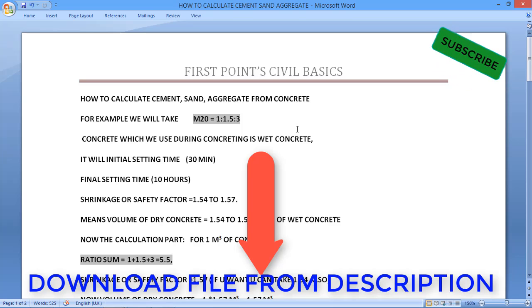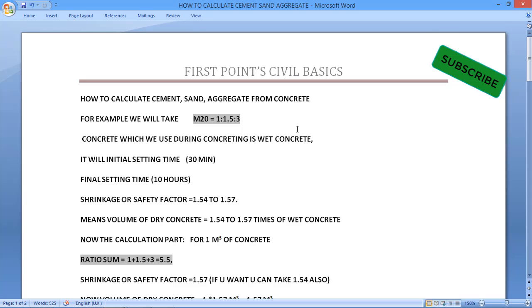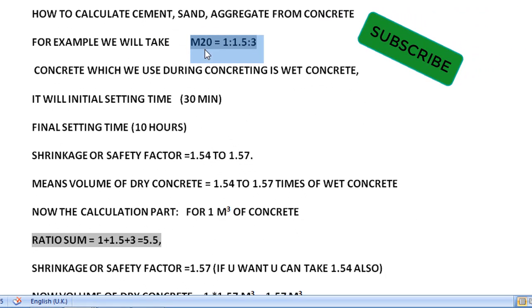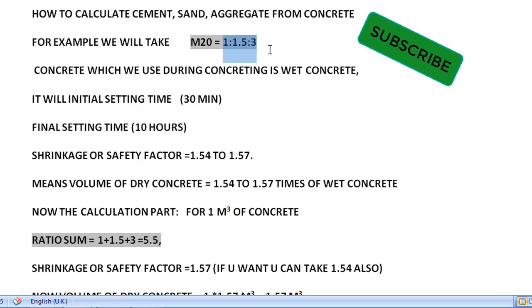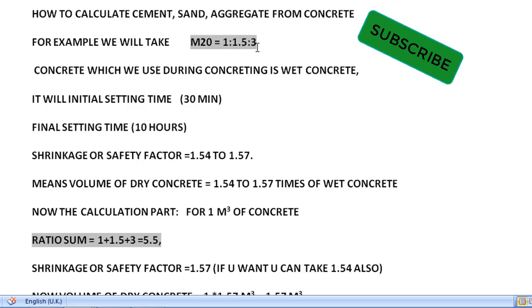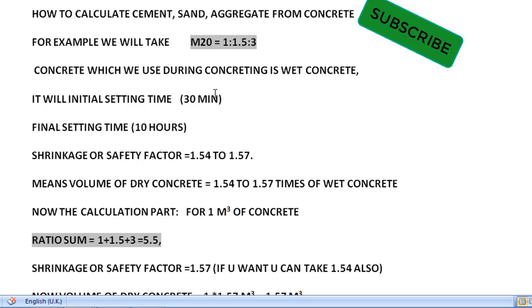So many students have this doubt about how to calculate cement, sand, and aggregate. We'll have different ratios for different grades of concrete. We'll take one example: grade of concrete M20. M20 is the grade of concrete and 1:1.5:3 is the ratio of M20 concrete — where 1 is cement, 1.5 is sand, and 3 is aggregate.